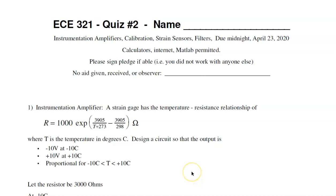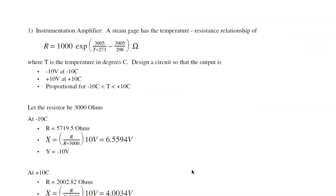This is the solution to quiz number two for ECE321. On the first problem, we're trying to design an instrumentation amplifier to convert a temperature to a voltage, going from minus 10 volts to plus 10 volts as temperature goes from minus 10C to plus 10C.